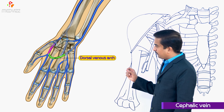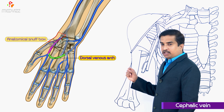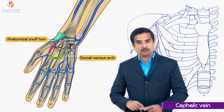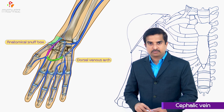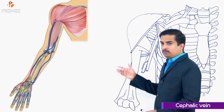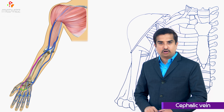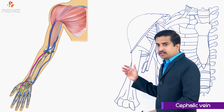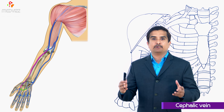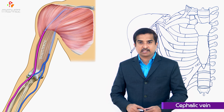From the anatomical snuffbox, the cephalic vein ascends along the radial border of the forearm and continues upwards in front of the elbow, along the lateral border of the biceps.